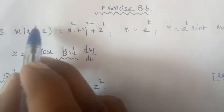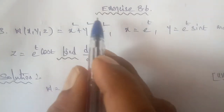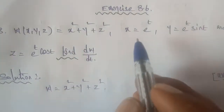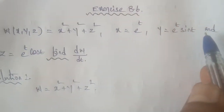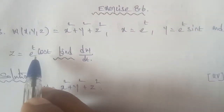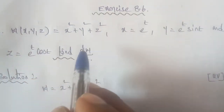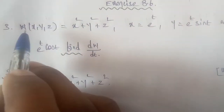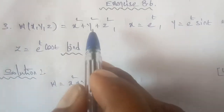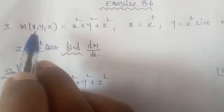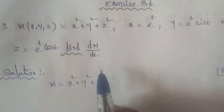To find dw/dt, we take the partial derivatives of the function w with respect to x, y, and z, then differentiate each variable with respect to t. We need to find ∂w/∂x, ∂w/∂y, and ∂w/∂z.